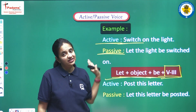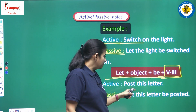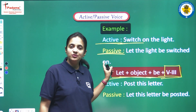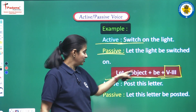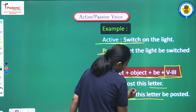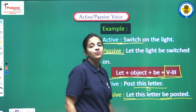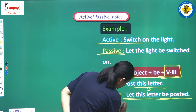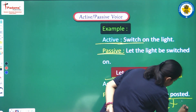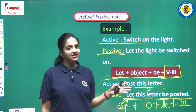Next example: 'Post this letter.' According to the structure, we write 'let,' then the object 'this letter,' then 'be,' then the third form of the main verb 'posted.' So the passive voice is 'Let this letter be posted.'